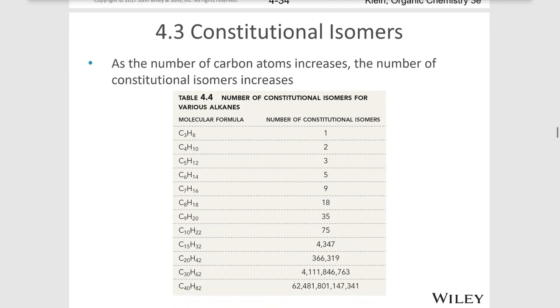As the number of carbon atoms increases, the number of constitutional isomers also increases. For example, if you have three carbons, you only have one possibility for a constitutional isomer.